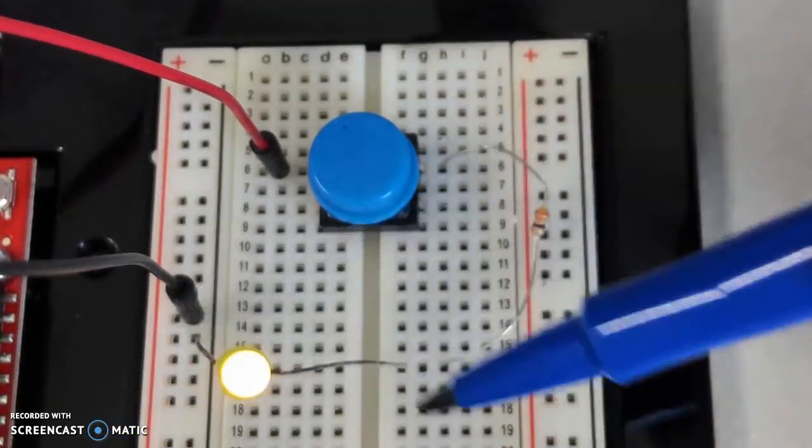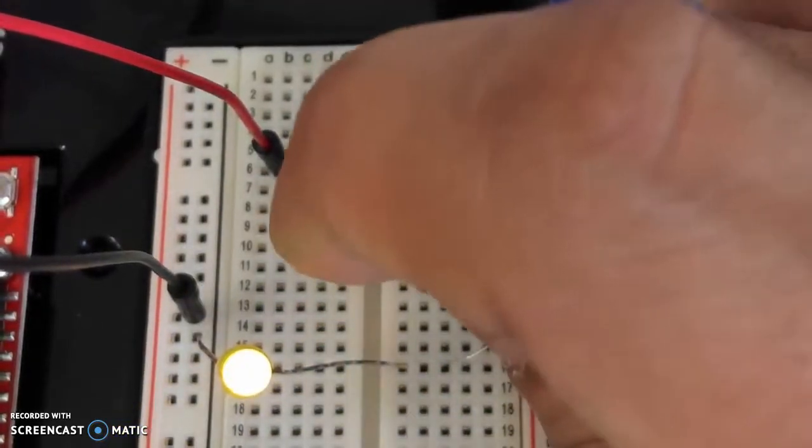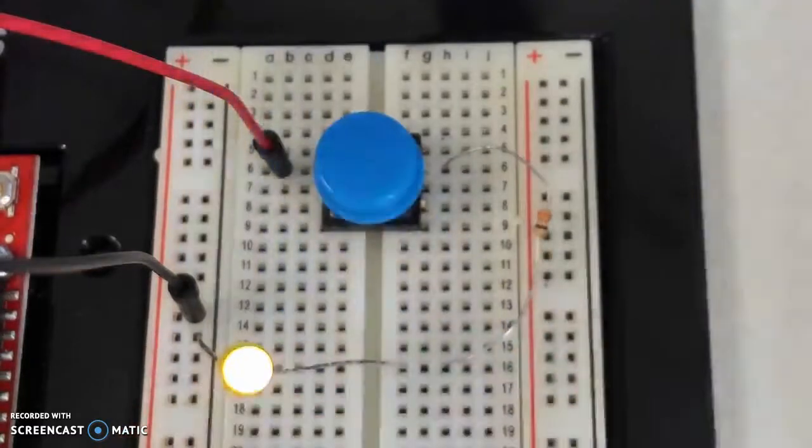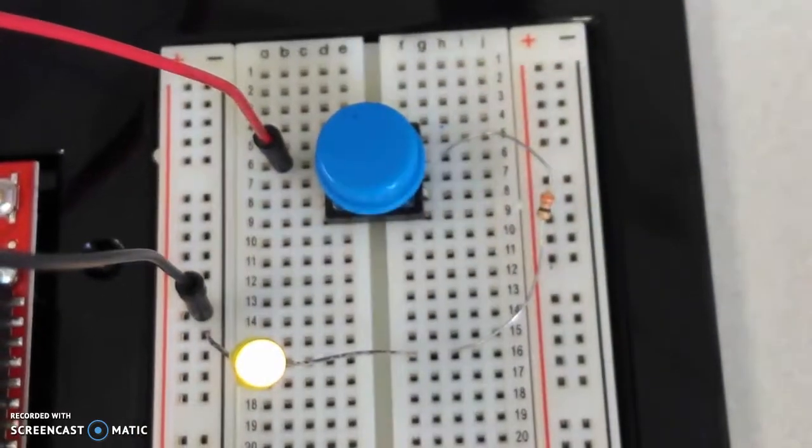And back to ground. So there's a complete loop. Whether I press the switch or not the LED is always lit up. This is a fairly common mistake people make when they first wire up a push button switch.